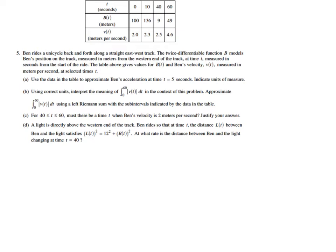For part C it says: must there be a time between 40 and 60 where Ben's velocity is 2 meters per second? Justify your answer. A lot of people make the mistake of saying no, because on the interval from 40 to 60 on our table, Ben starts going 2.5 meters per second and at the end he's going 4.6. So you look at that and say, if he starts at 2.5 and ends at 4.6, there's no reason he would have ever had to have been going 2 meters per second — he could have just been continuously increasing his speed from 2.5 to 4.6 over that 20-second interval.